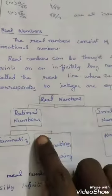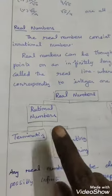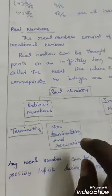Real numbers means rational numbers joined together. Rational numbers means terminating, non-terminating, recurring.